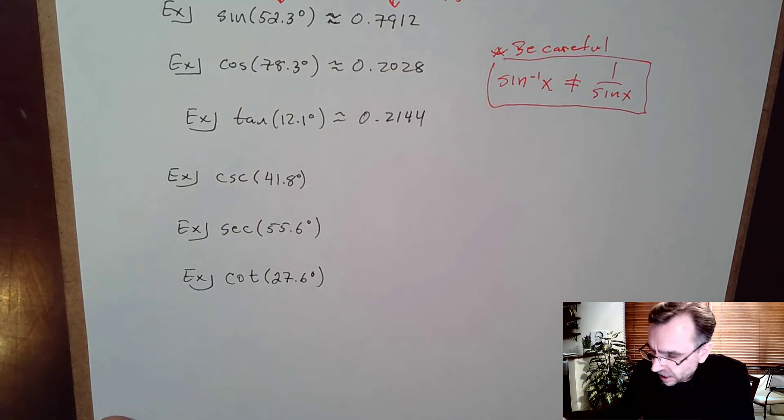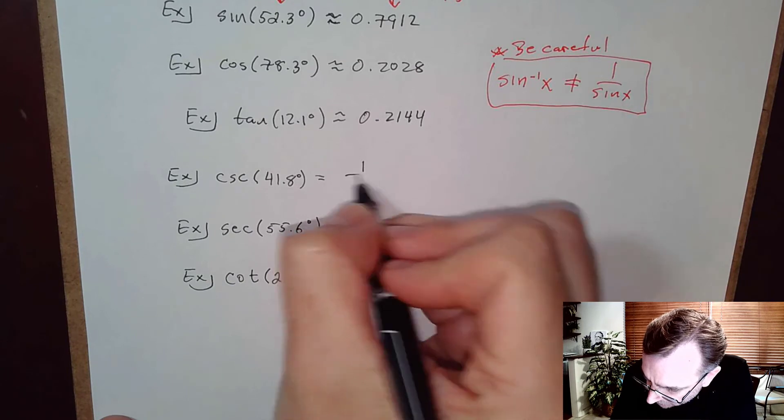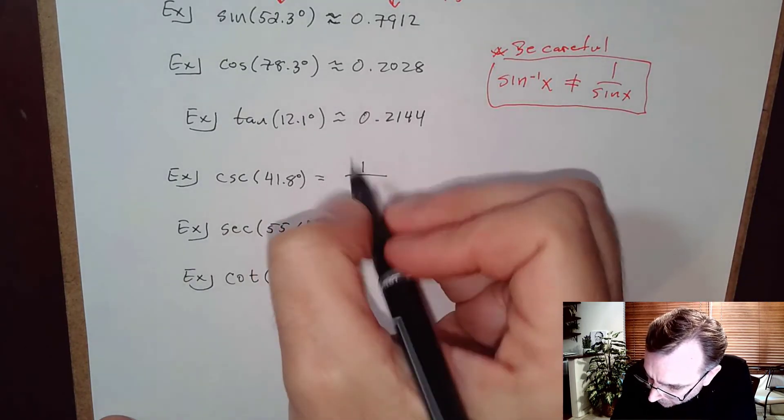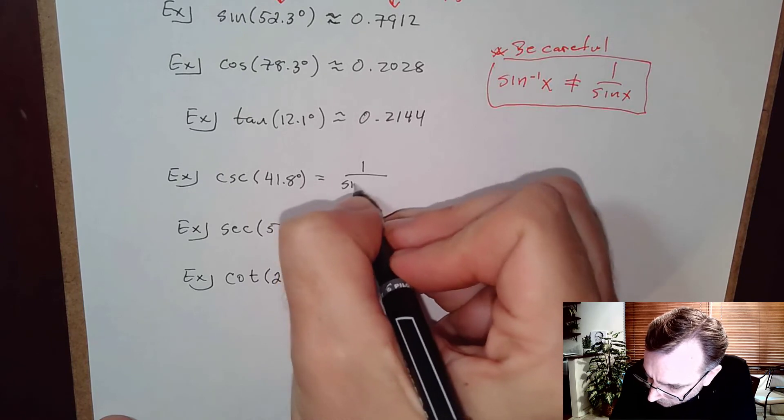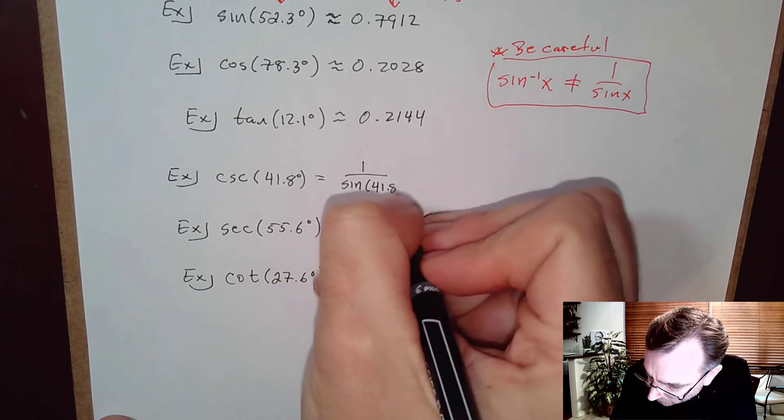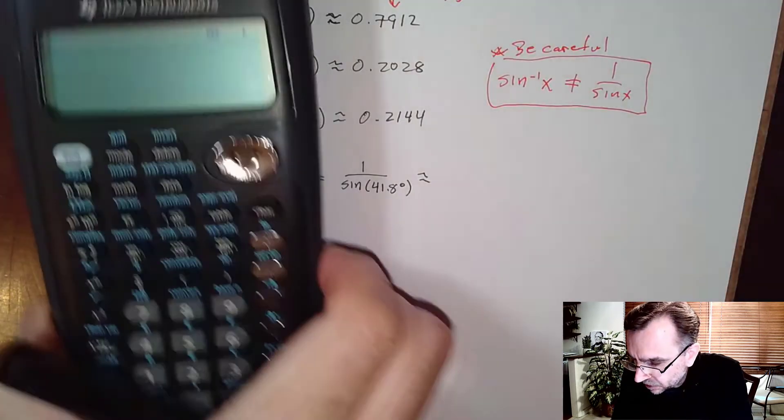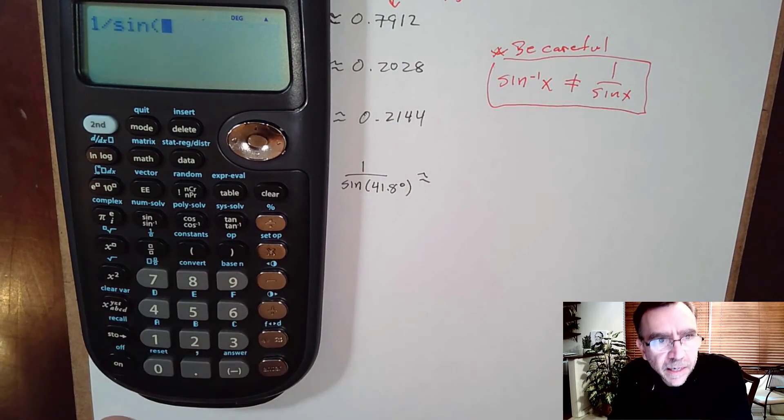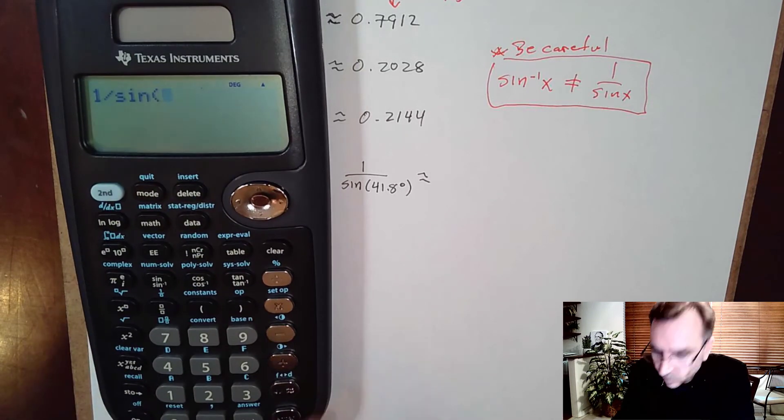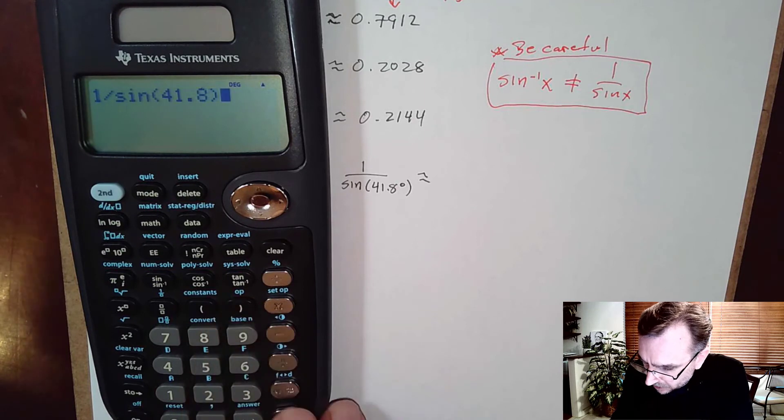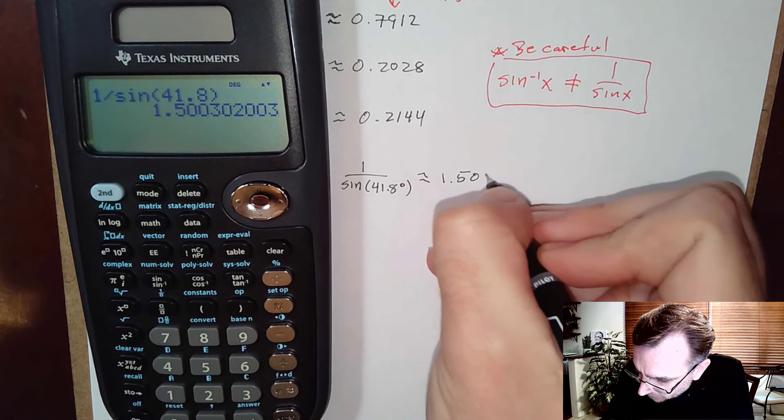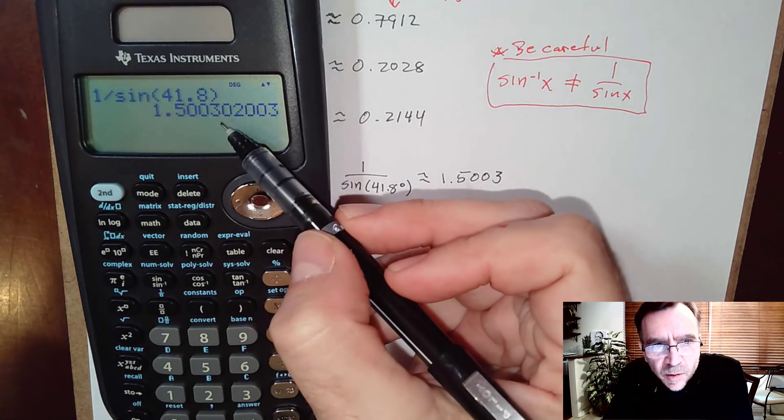What we're going to have to do to calculate cosecant on our calculator is type in 1 over sine, since cosecant is 1/sine. This would be 1 over sine of 41.8°. That's how we're going to calculate cosecant. One divided by sine of 41.8° - I get 1.5003 rounded off properly.